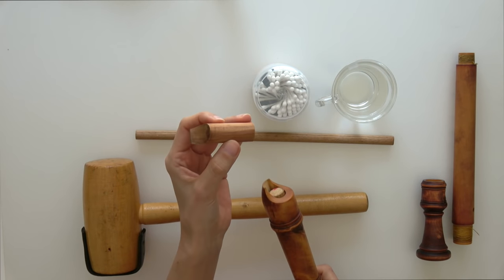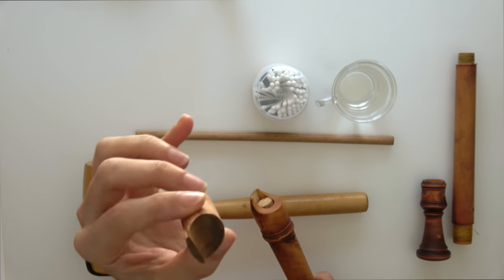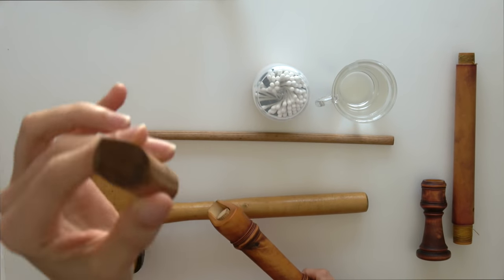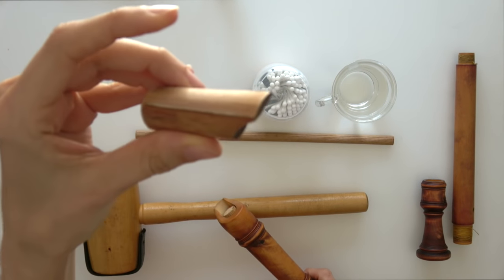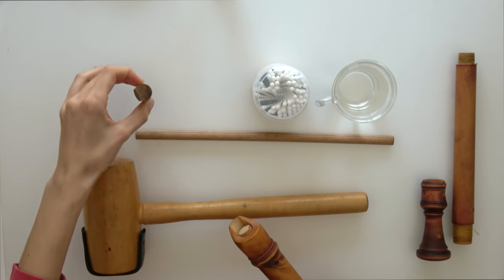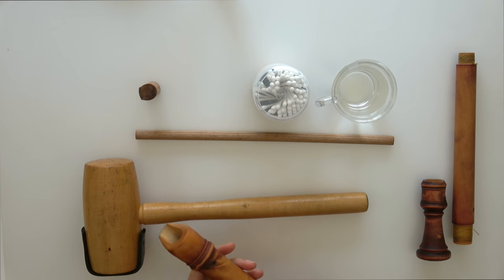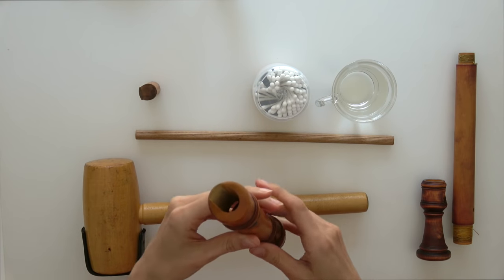Here is the block. You can see the rounded part and the flat part. And this is what a blockless recorder looks like on the inside.